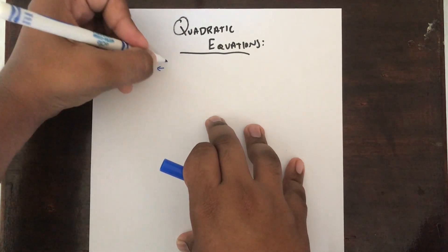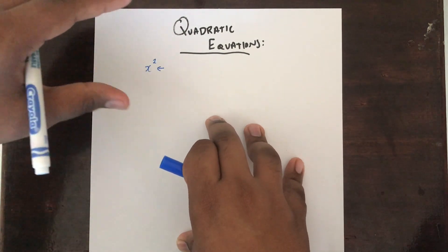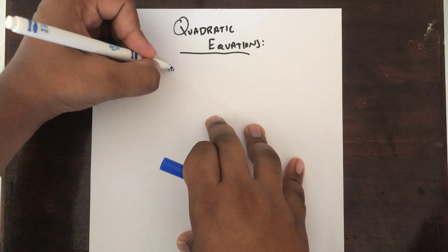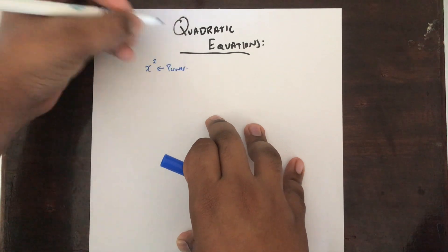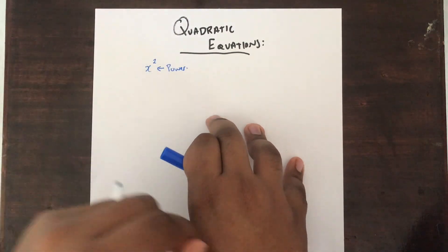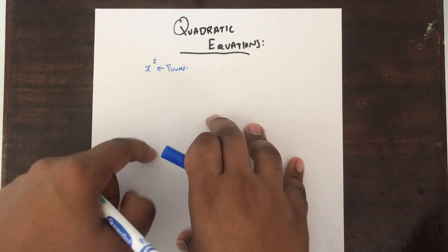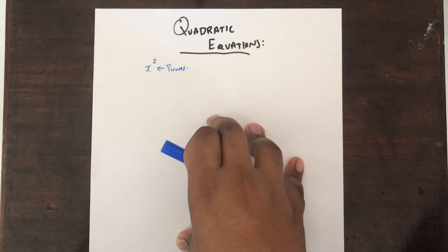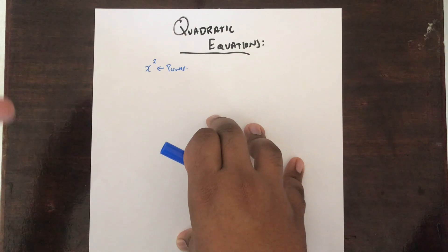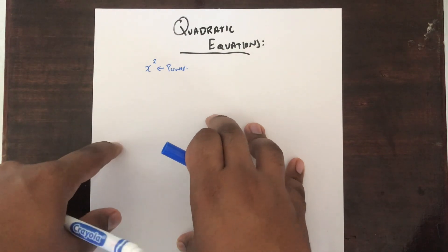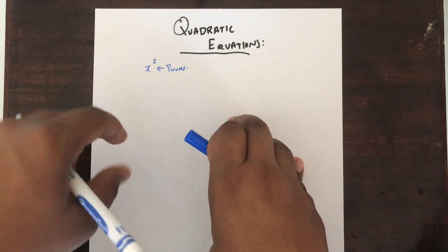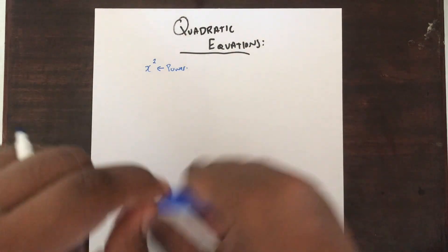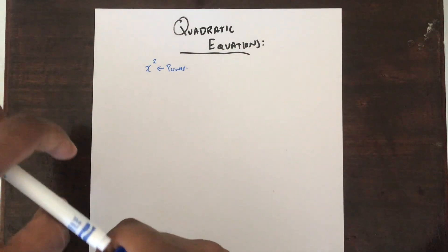This only applies to things which have x power 2. If you have x power 3, that will not be a quadratic equation — that will actually be a polynomial, which we will be discussing in the later videos. So if you have anything with x power 2, you have a quadratic equation.